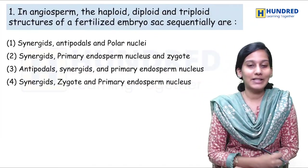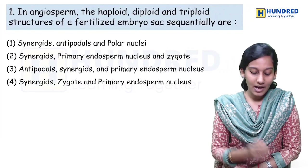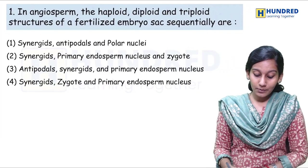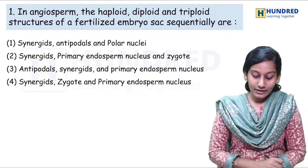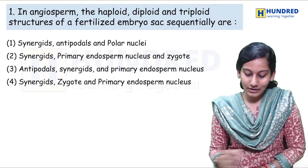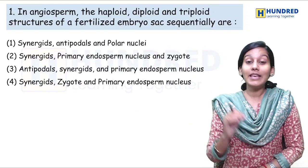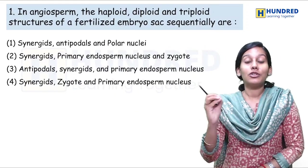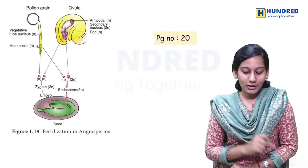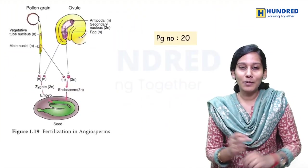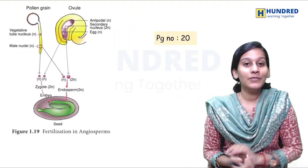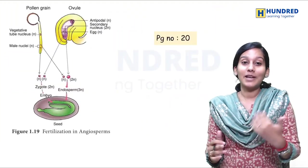So this is the 12th syllabus. First, in the angiosperm, the haploid, diploid, and triploid structures of a fertilized embryo sac sequentially — so chromosomal number is being considered. So in this question, if we ask this question, there is a picture in our book.